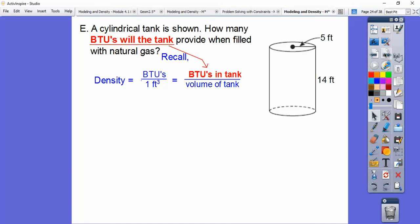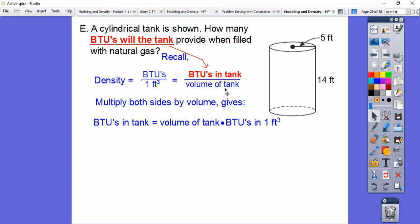So we're looking for that. And we're multiplying both sides by volume right here, because we want to get this volume out of the denominator. So if I multiply this over here times volume, it will be left with BTUs in the tank. So here we have BTUs in the tank equals the volume times the BTUs per one cubic foot.